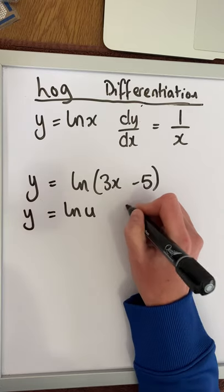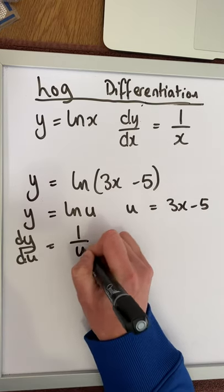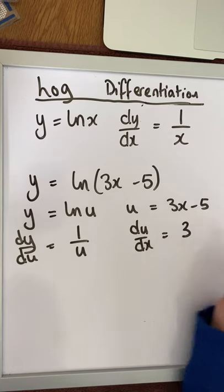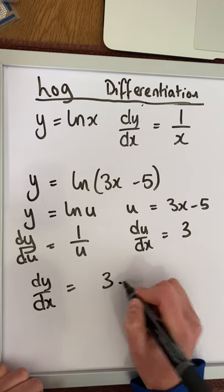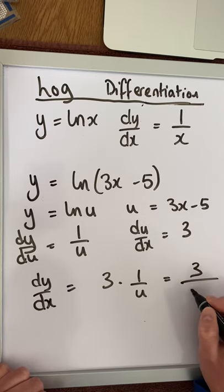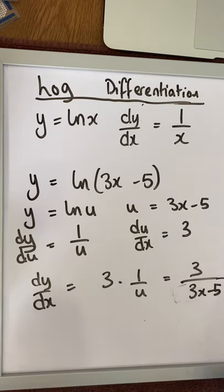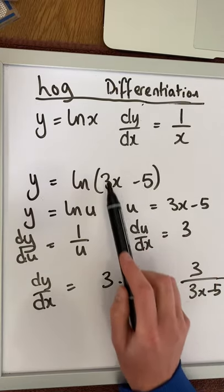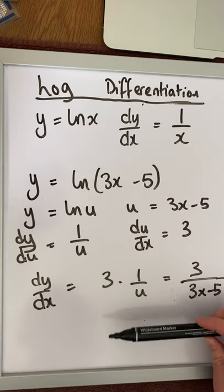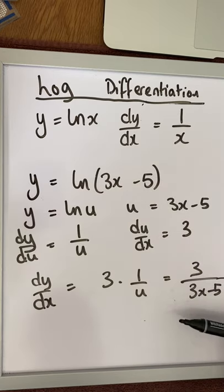We can say y is equal to natural log of u, where u is equal to 3x minus 5. We know that dy/du is simply 1 over u, and du/dx is 3. Therefore dy/dx is 3 times 1 over u, which is 3 over 3x minus 5. So you differentiate the log function — that's 1 over 3x minus 5 — and you simply multiply by the derivative of the bracket. You can use that shortcut or the chain rule.